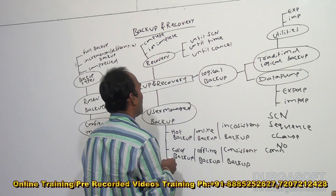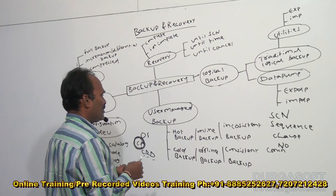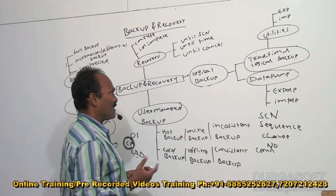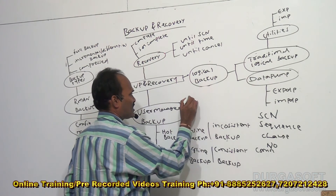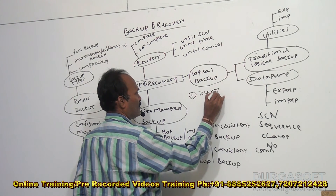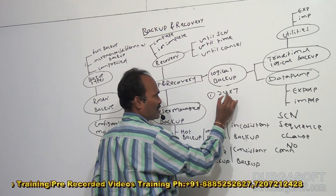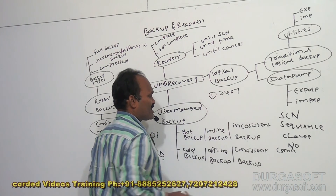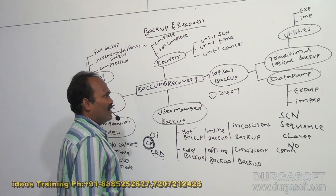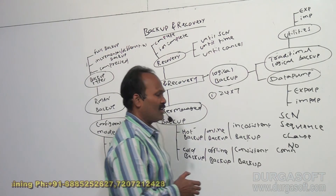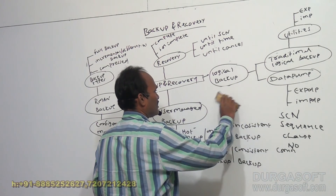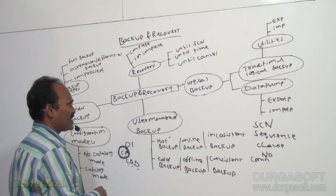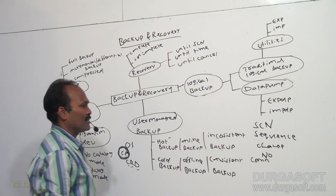Consistent backup and inconsistent backup are the most important concepts, and there is a lot of difference between logical, RMAN, and hot backup as well. Why are all these types of backups required? Suppose a system is running in 24x7 mode — for example, banking organizations or hospitals. These organizations run their databases in 24x7 mode, so the database cannot be shut down. In such cases, hot backup is required. User-managed backup is completely inefficient in this scenario. Using OS commands to take backup of CRD files is not completely efficient when compared to RMAN backup.